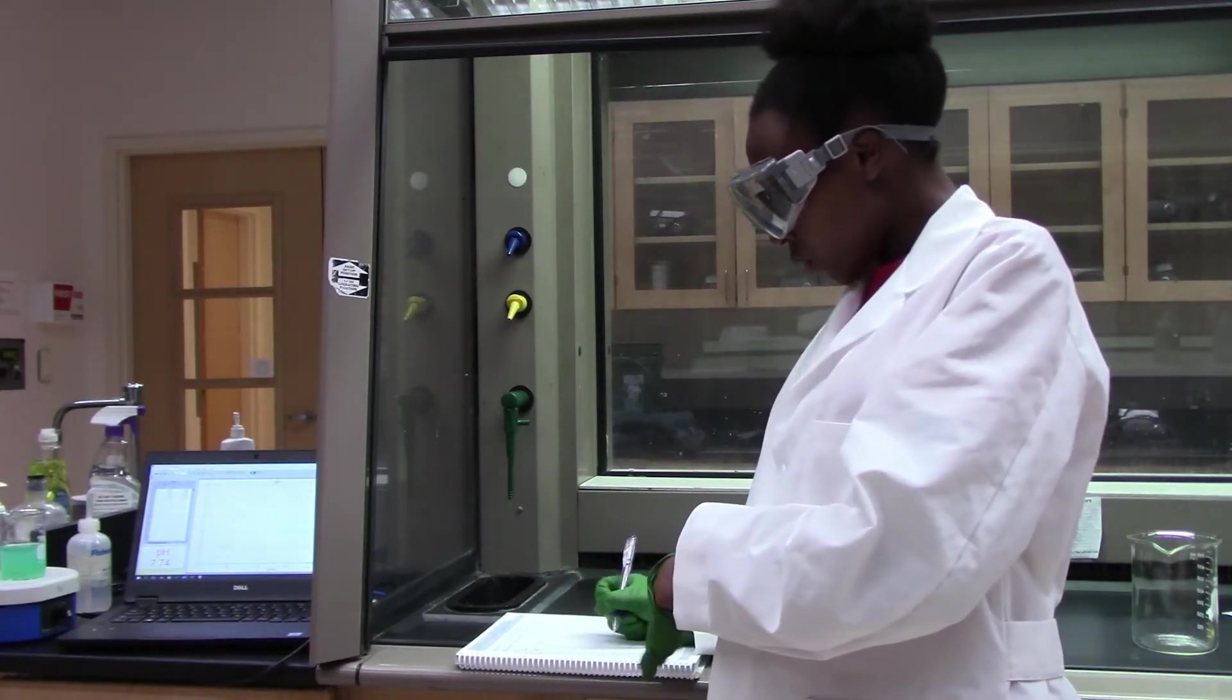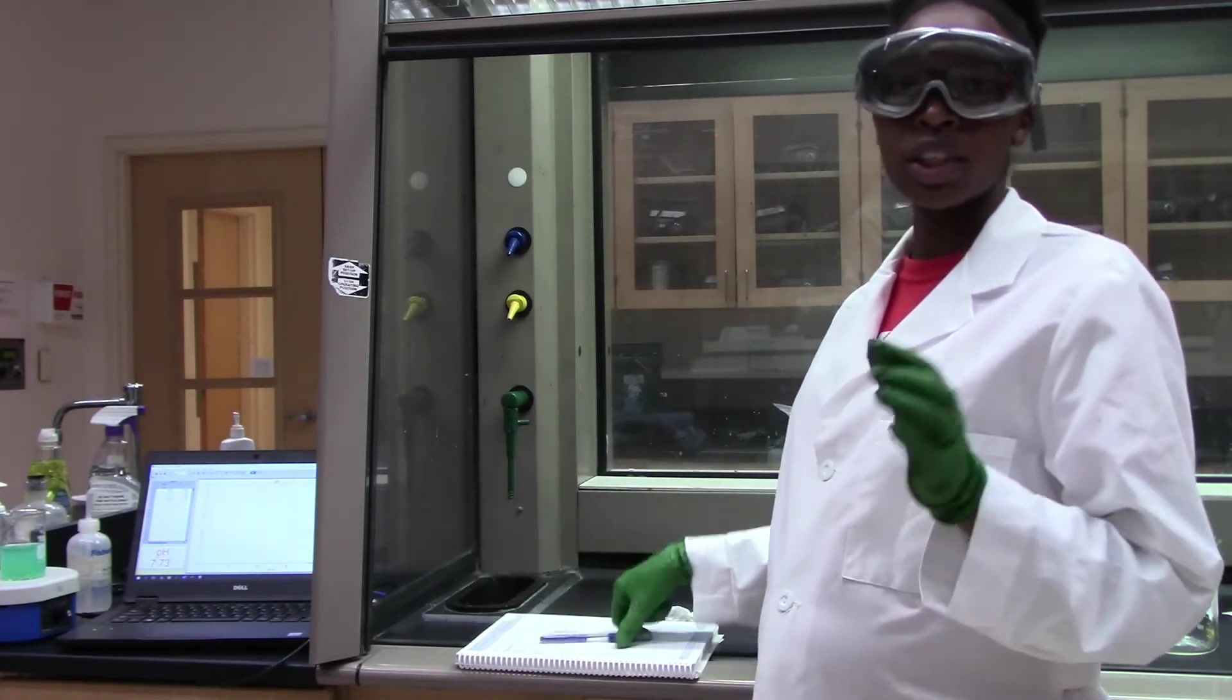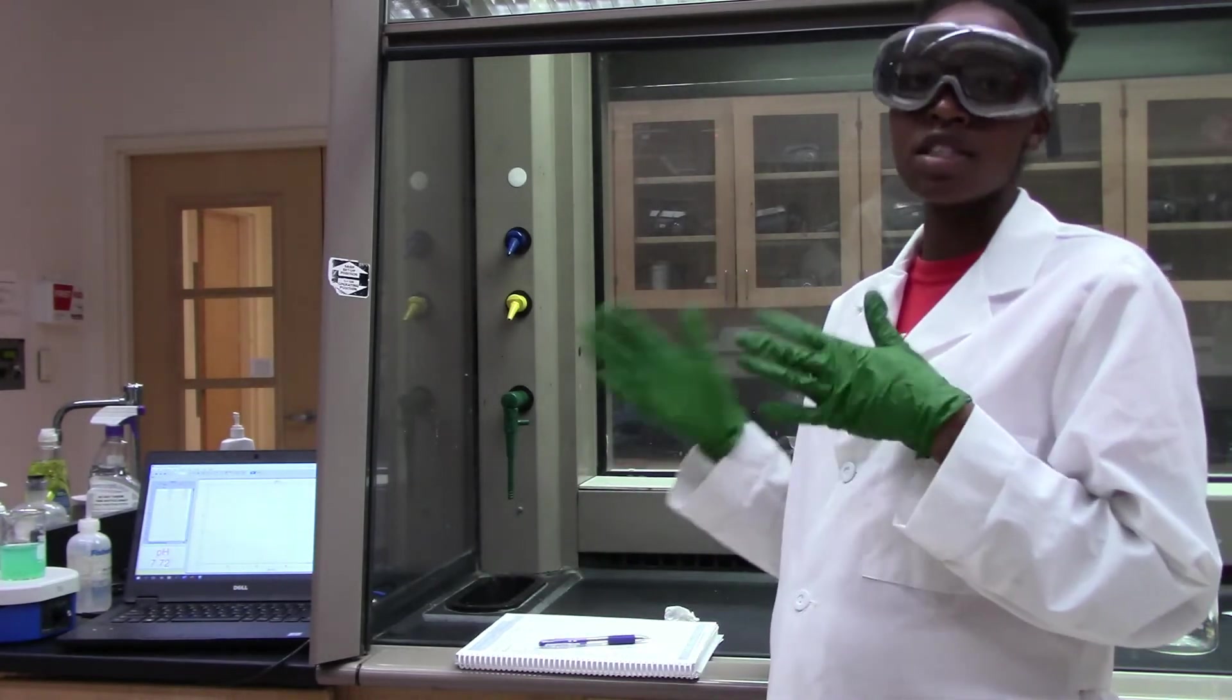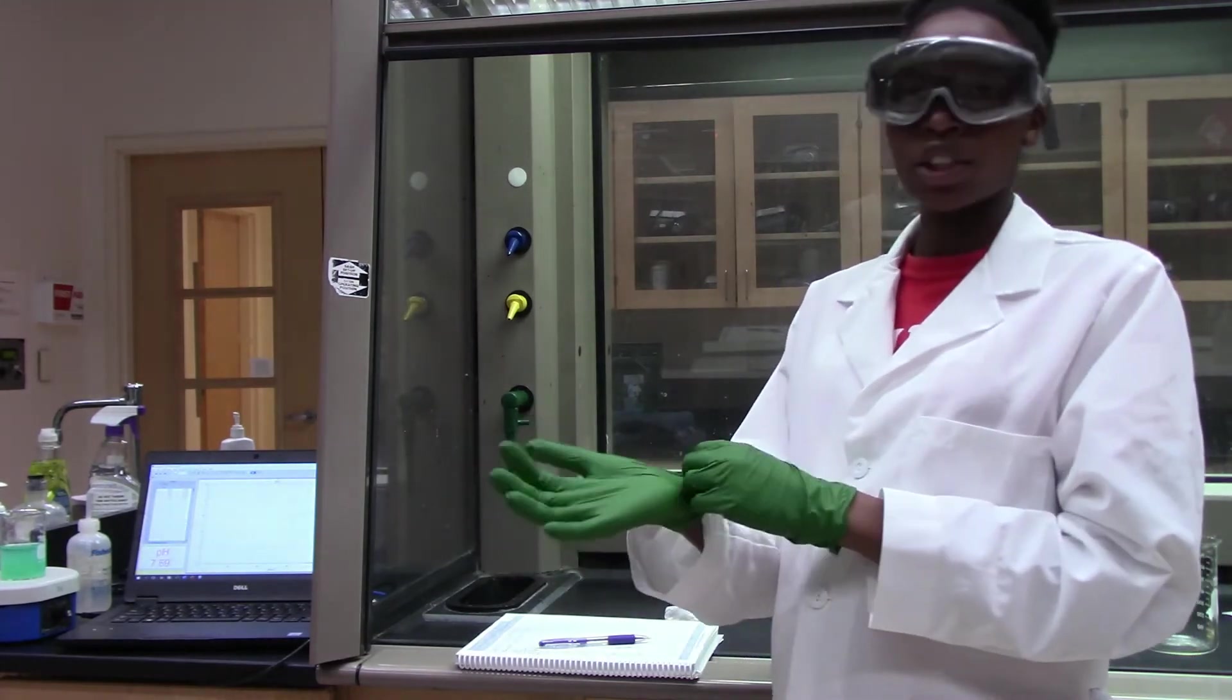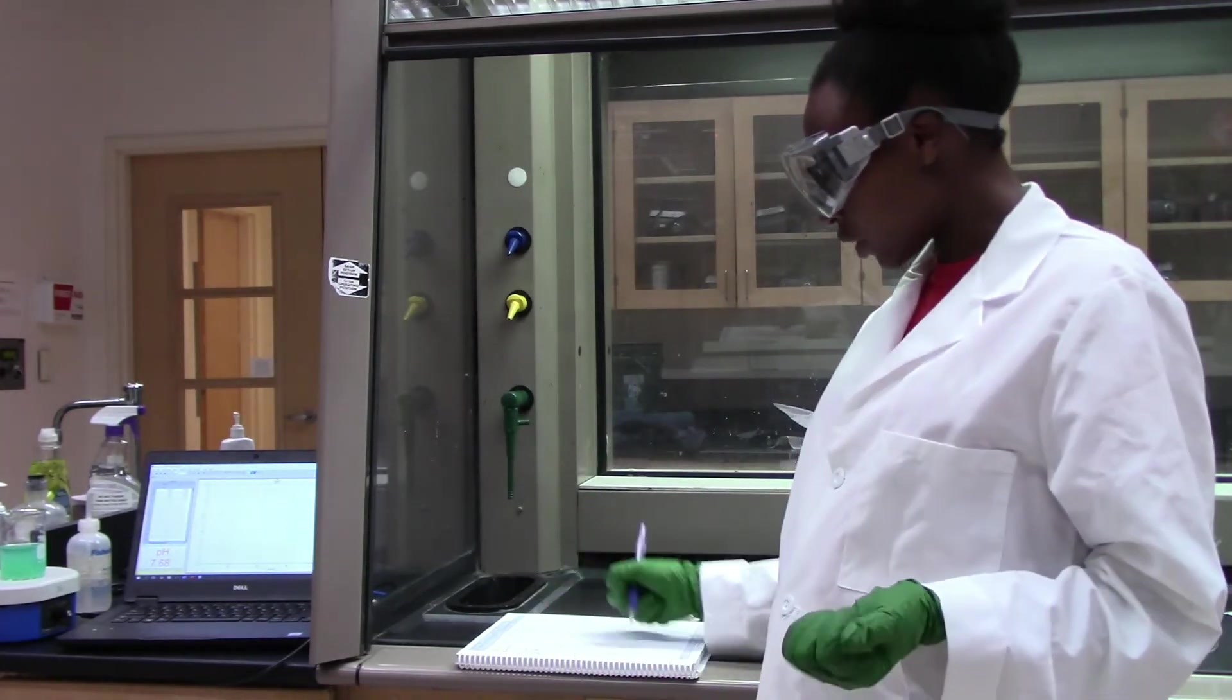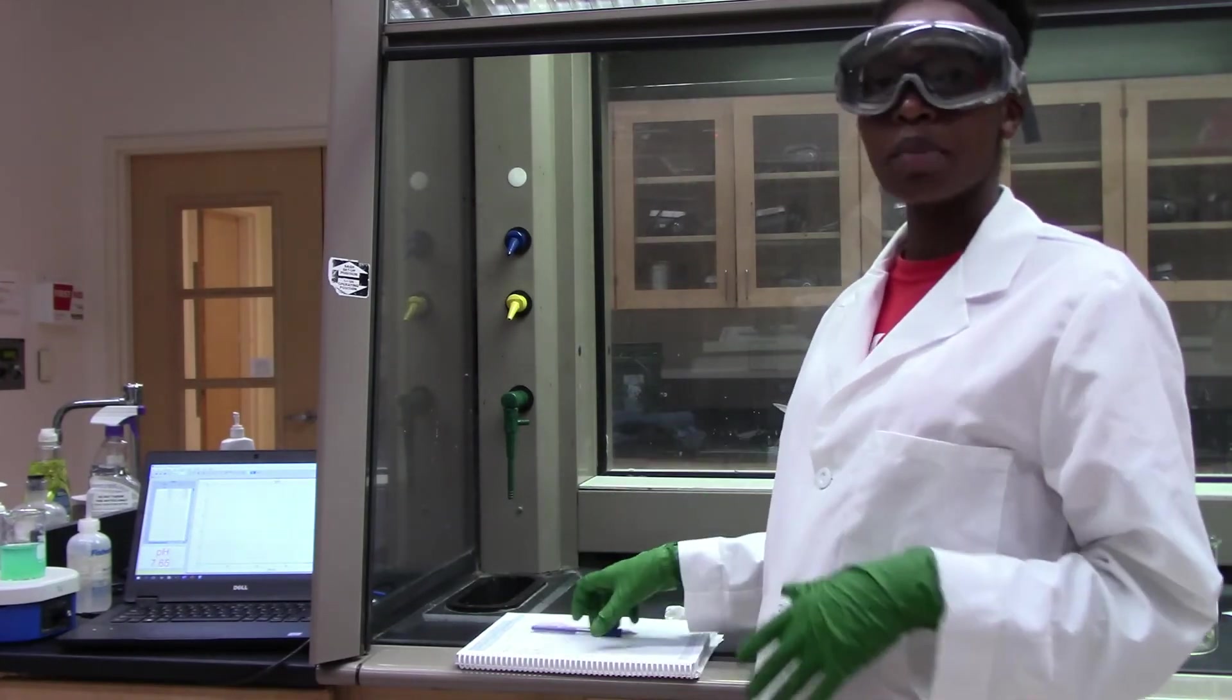After that, when I have a pH reading, like three successive pH readings with a difference of about 0.2 units, then I can stop my pH measurements and I know that I have reached an equilibrium and that should be the end of my experiment.